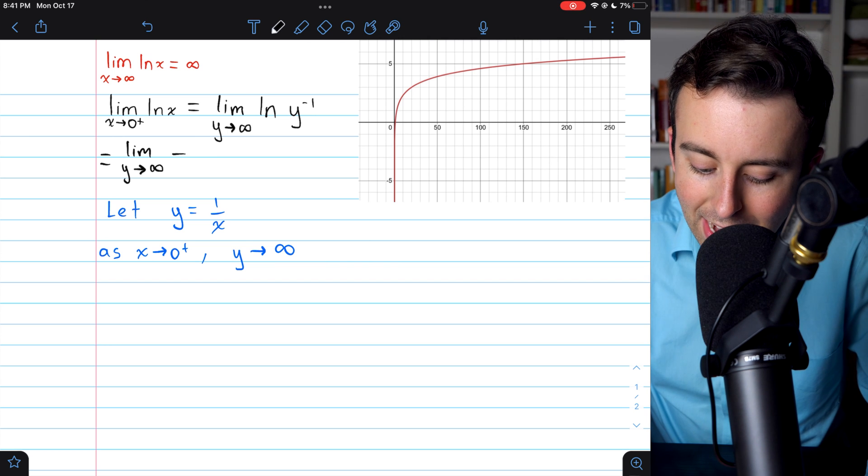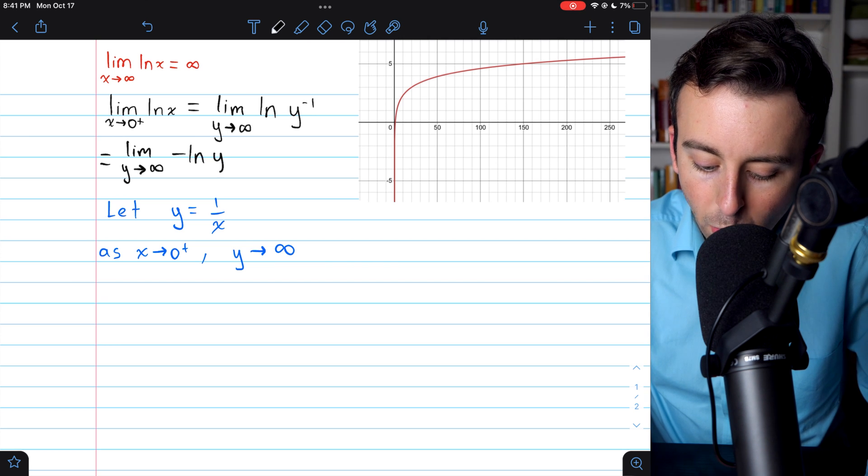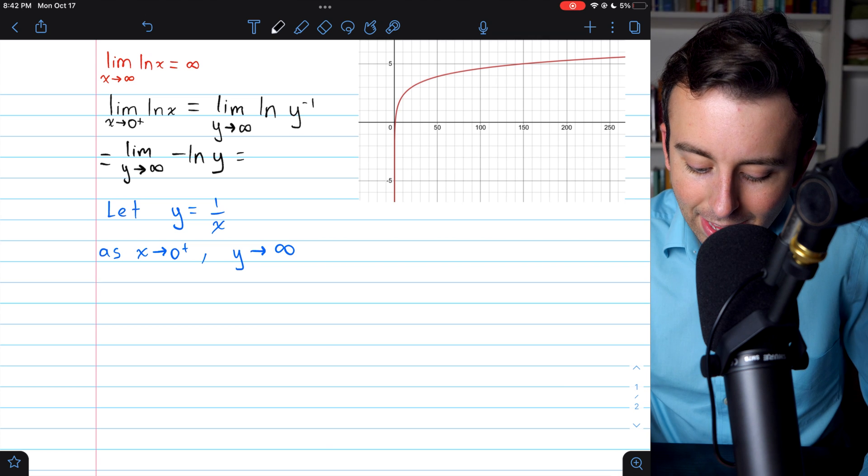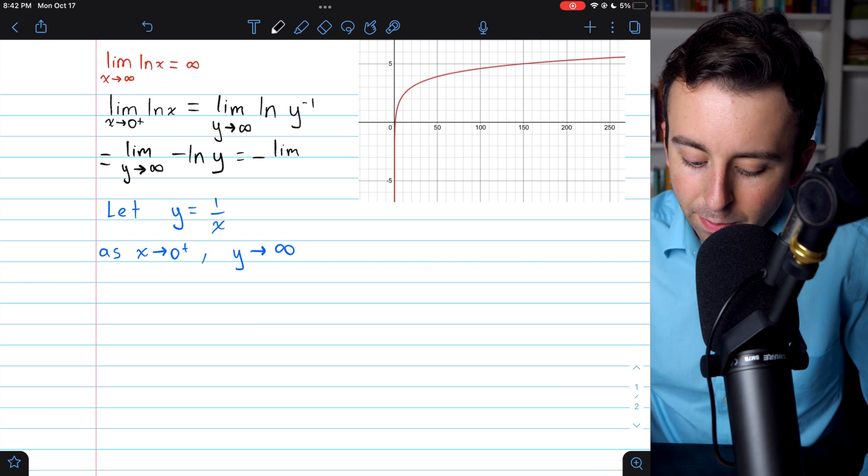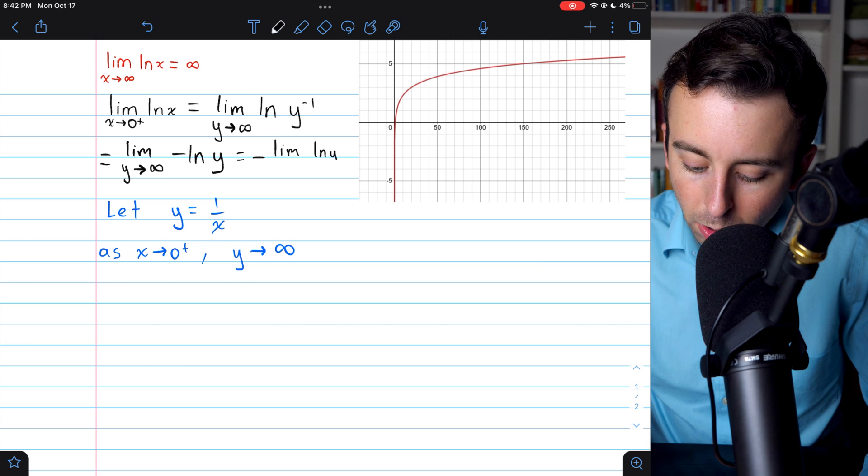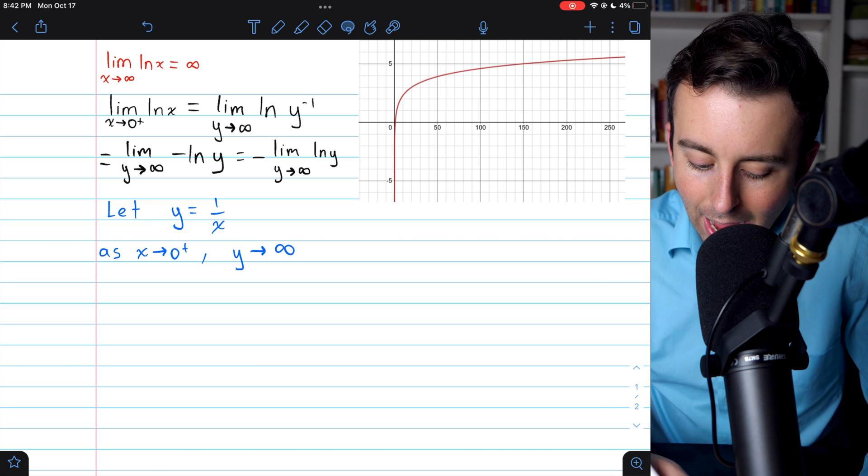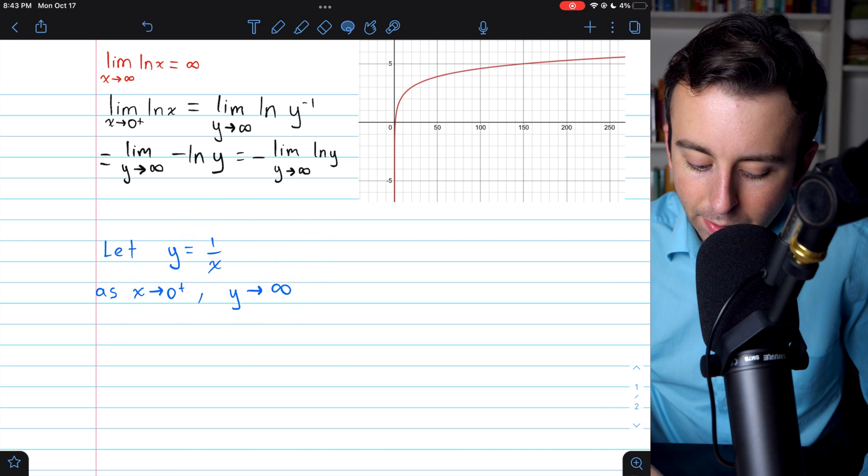So this becomes negative log of y. And we can just slide that negative all the way out. So what we have is negative limit of natural log of y as y approaches infinity. And now we can use our previous result.